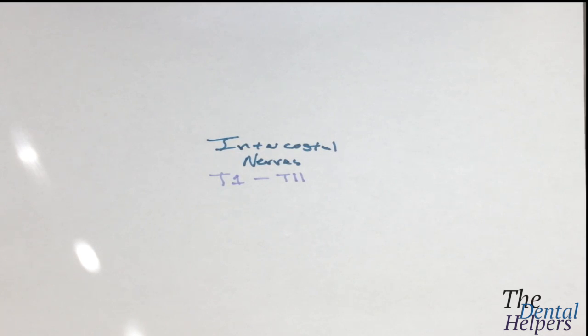They give off lateral cutaneous branches that have anterior and posterior branches. They terminate as anterior cutaneous nerves with lateral and medial branches. Cutaneous means sensory innervation to the skin. These arise from the somatic nervous system and allow control for muscle contraction as well as provide specific sensory information regarding the skin and the parietal pleura.